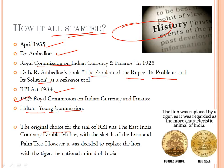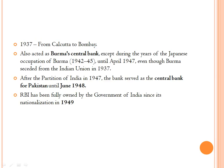The original seal of the RBI was the East India Company's double moho, featuring a sketch of a lion and a palm tree. However, it was decided to replace the lion with the tiger — the national animal of India. The central office of the RBI was established in Calcutta and was later moved to Bombay in the year 1937.